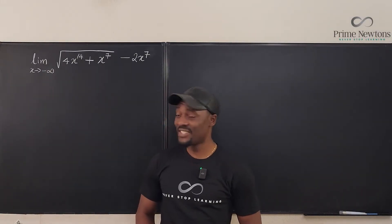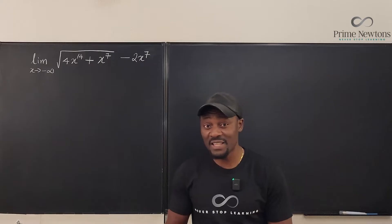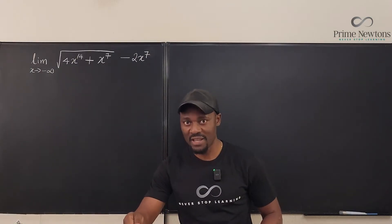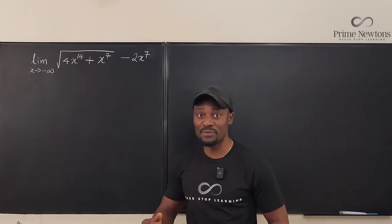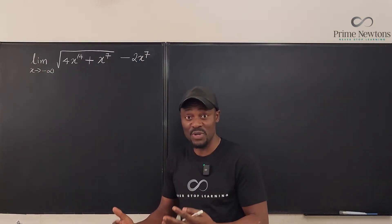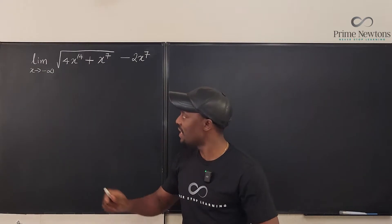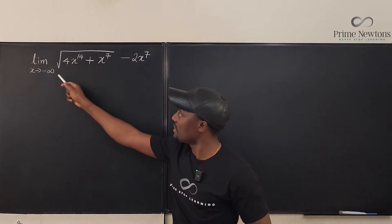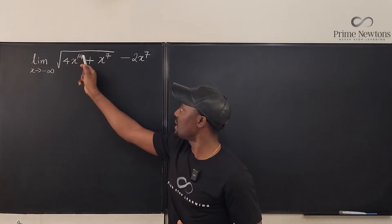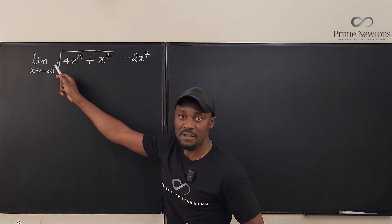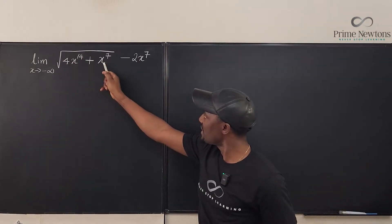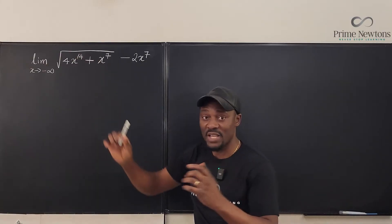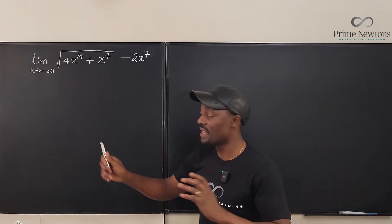Welcome to another video. This is an infinity problem because we're taking a limit as x goes to negative infinity. We can't just plug in infinity whenever we see it, so we have to first understand the direction of the function. If you plug in negative infinity into this function, negative raised to the power 14 is an even number so it gives you infinity, but the other term gives you negative infinity. So you have infinity minus infinity — and you cannot subtract infinity from infinity, so that's a problem.